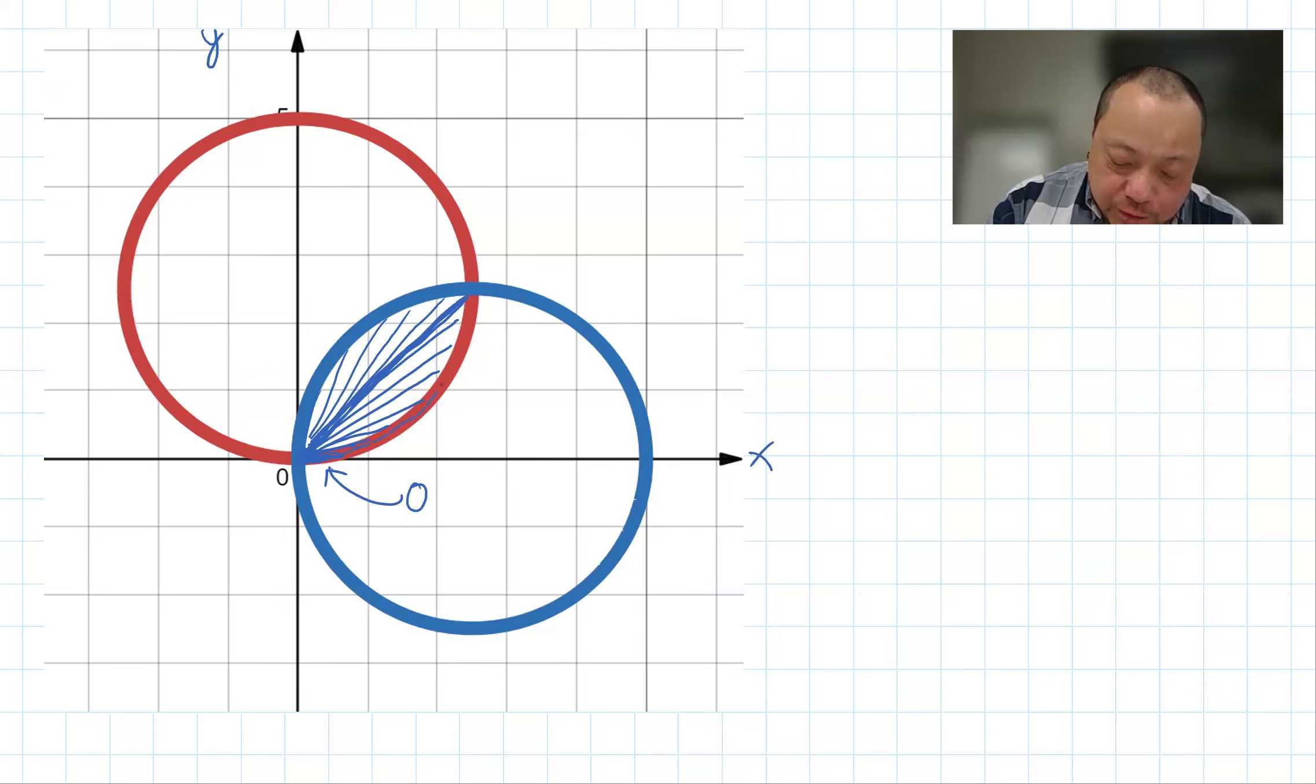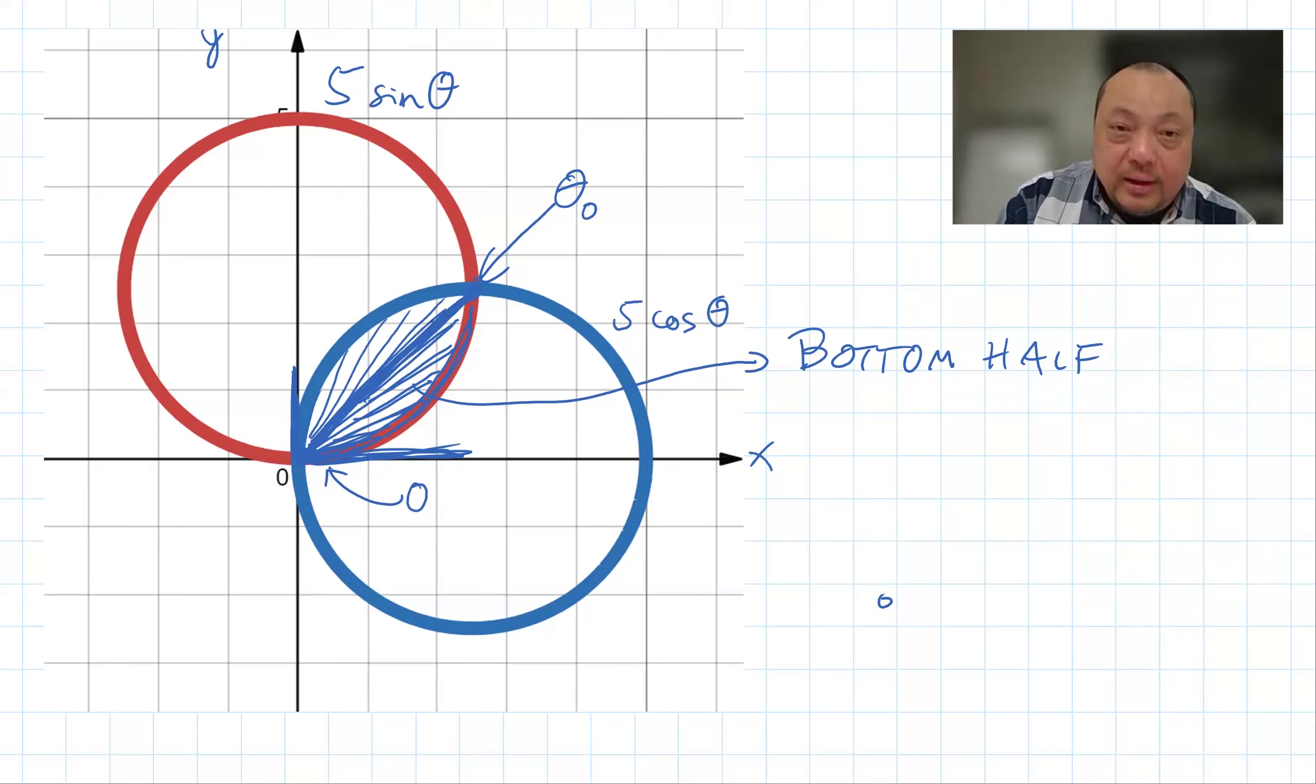So we know it starts at zero. And if we stick to the red curve, then you go from zero to this point. So we need to find this point. Let's call this theta naught. So the bottom half, let's start with the first angle here and end with theta naught angle there. The area is integral from zero to theta naught of one half r squared, which is the red circle, so 5 sine theta squared d theta.